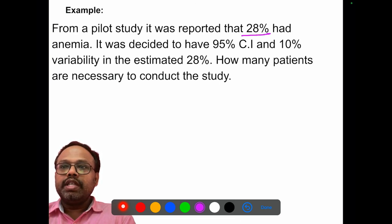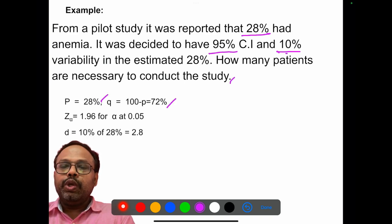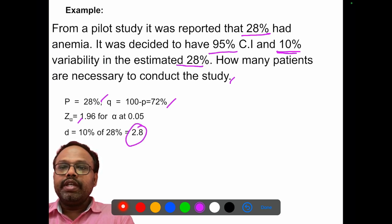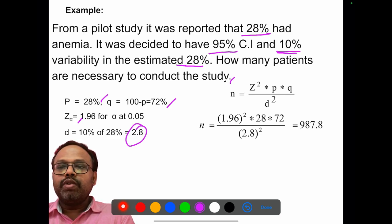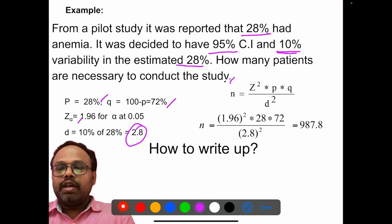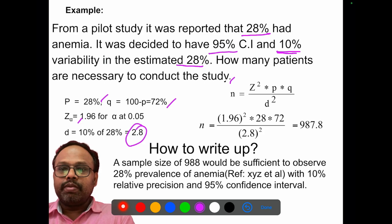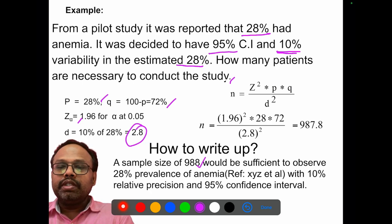Here is one example for estimation of proportion. P is given as 28%. Ten percent variability means the relative precision. Q is calculated based on this. Z-alpha is 1.96. Since it is 10% of 28%, the precision D is 2.8% (relative precision). Applying n = Z² × P × Q / D², we get the result. To write this up in your proposal or manuscript: 'A sample size of 988 would be sufficient to observe 28% prevalence of anemia according to this reference study with 10% relative precision and 95% confidence interval.'